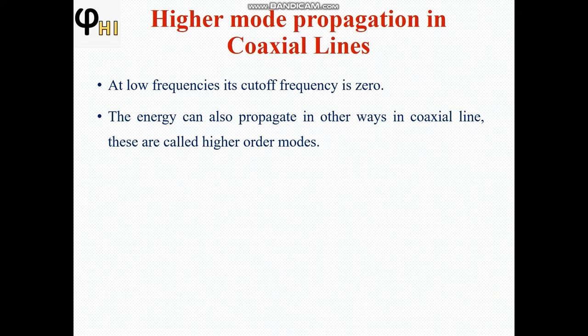Higher order modes also propagate in the coaxial transmission line. At low frequency there is no cutoff frequency, but energy can also propagate in other ways in the coaxial line — these are called higher order modes, which are the transverse electric mode and transverse magnetic mode.